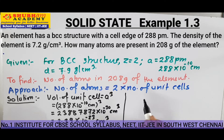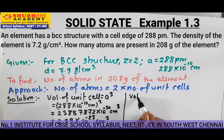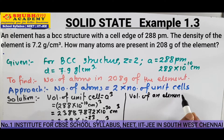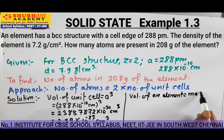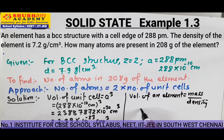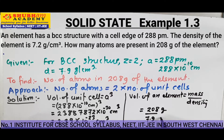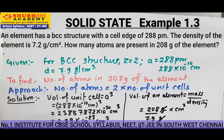We know that volume of an element is equal to mass divided by density. Mass is given as 208 gram, and density is also given as 7.9 gram per centimeter cube. The gram units cancel, so here we get 28.88 centimeter cube. This is the volume of the element.